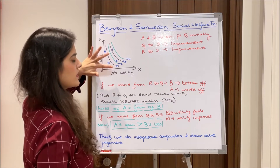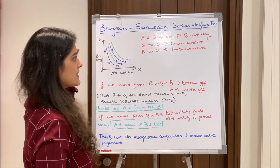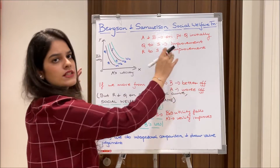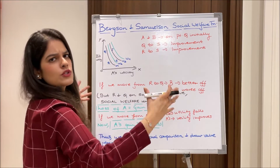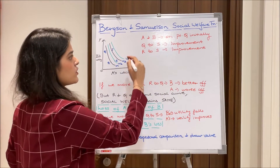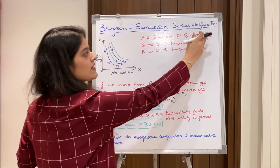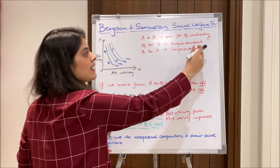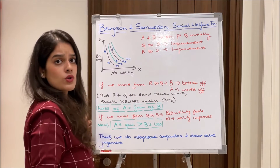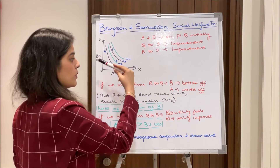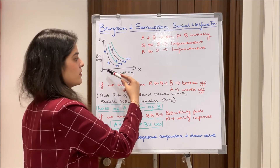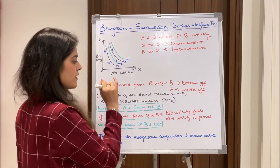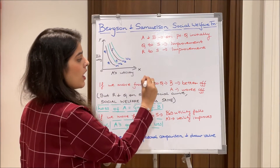When we move from Q to S, there is an improvement in social welfare due to some policy changes. When we move from R to S, there is again an improvement — because moving from a lower social welfare curve to a higher one represents an improvement.